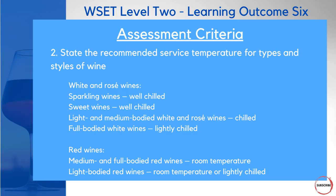Moving on to assessment criteria two — this is where you need to be able to recommend service temperatures for the various types and styles of wine. For white and rosé wines, sparkling wines like champagne, prosecco, and cava need to be well chilled. That's also the same for sweet wines. Then it slightly changes depending on the style: for light and medium-bodied whites and rosés, chilled is the best way to serve. For full-bodied white wines, you only need to lightly chill them.